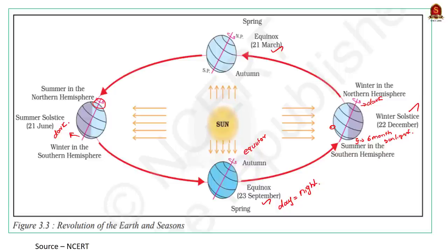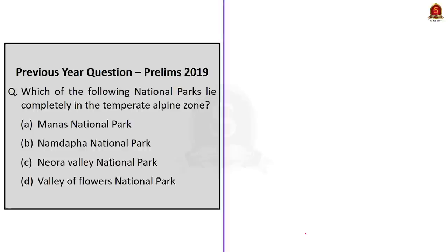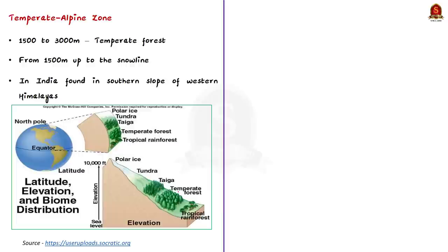Now let us conclude the discussion regarding this question and take up the next question. This is also a geography-based question. Which of the following national parks lies completely in the temperate alpine zone? The options given are: Manas National Park, Namdapha National Park, Neora National Park, and Valley of Flowers National Park.